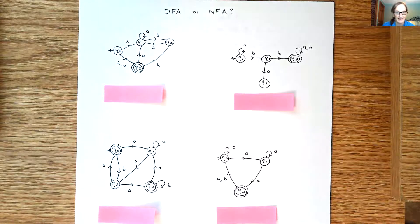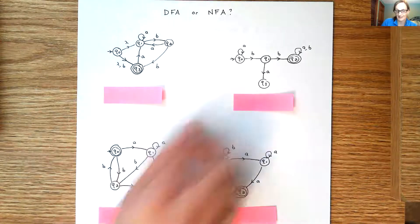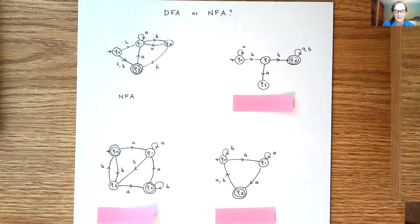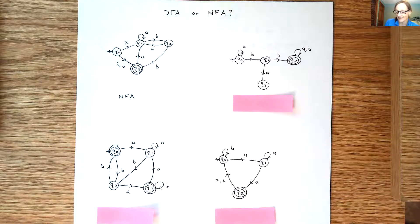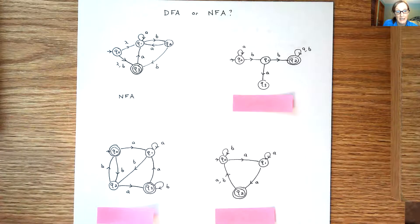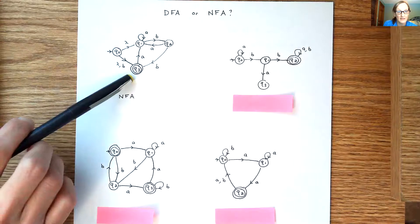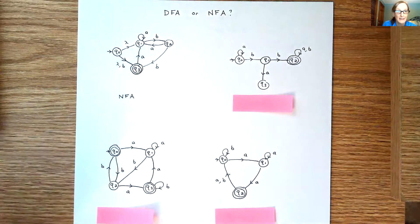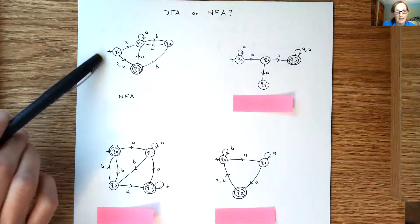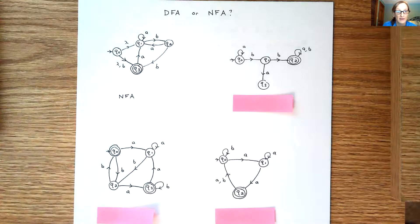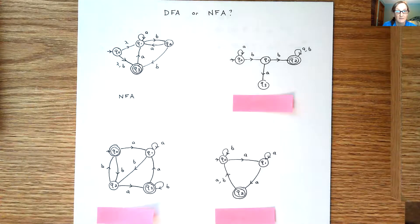Alright, so if you did as I asked, the first one is an NFA, and the reason it's an NFA is because we have lambda transitions here. You'll also notice that for instance the state Q3 has a transition out on an A but there's no B, and the state Q0 doesn't have a transition on an A, so those are some of the reasons why that is an NFA.